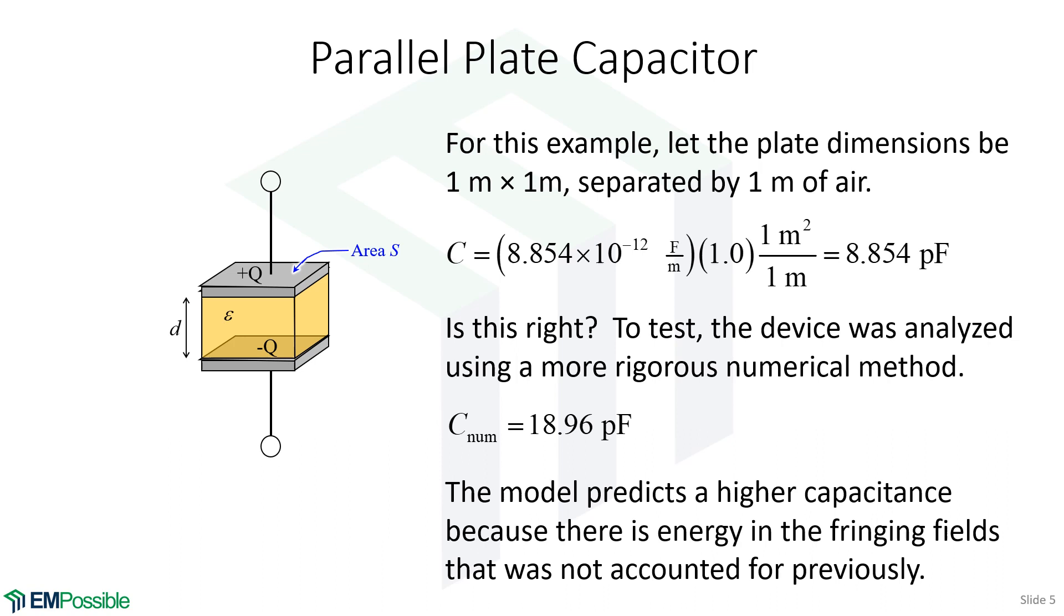It's the fringing fields. There's actually energy outside of the area immediately between the plates, and this has to be accounted for because that contributes to capacitance. So the more rigorous capacitance is actually higher than what our analytical capacitance would calculate, because our analytical is only looking at a perfectly uniform field immediately between the plates. And what you'll see is it's neither completely uniform nor inside the plates.